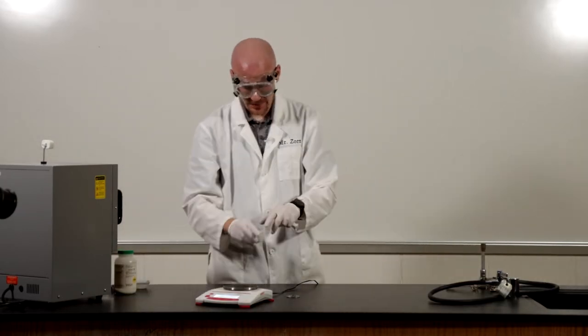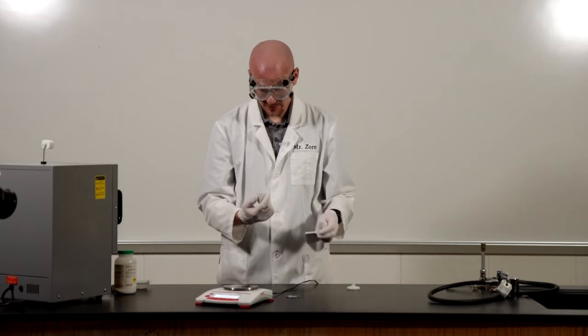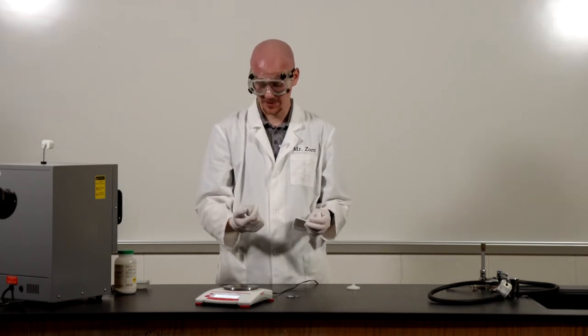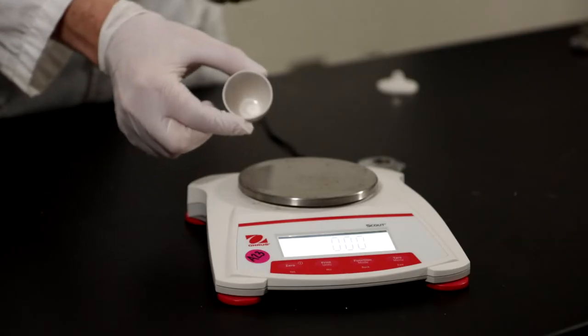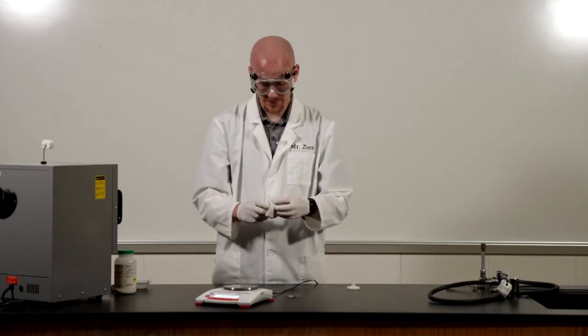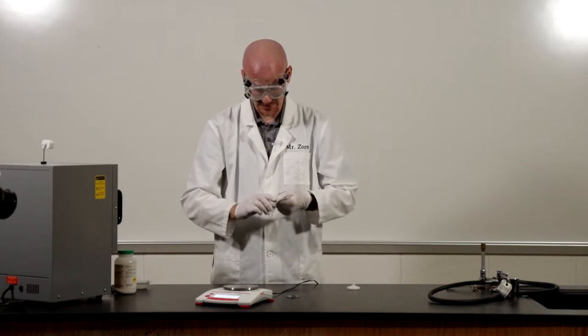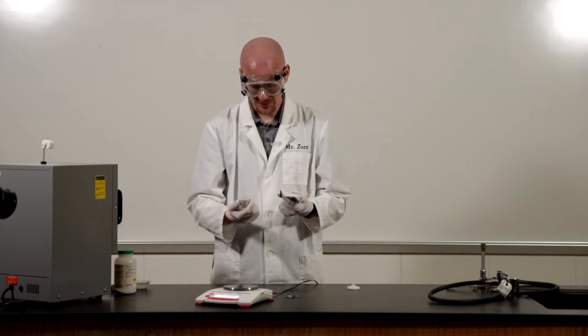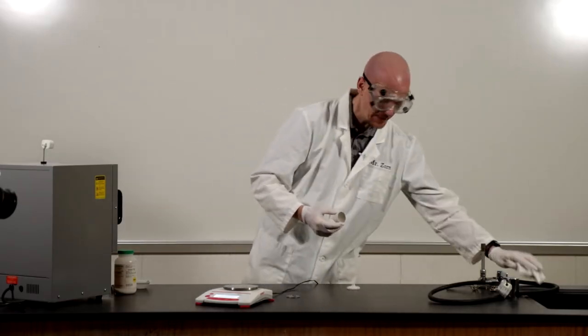Okay, first thing we're going to do is we're going to take our crucible, which is what we're going to be heating our sample in. Wow, this one is super clean. Most of the time our crucibles are not this clean, but whoever cleaned this one previously did an awesome job. I'm going to go ahead and take a paper towel and I'm going to wipe this out just to make sure there isn't anything left inside.